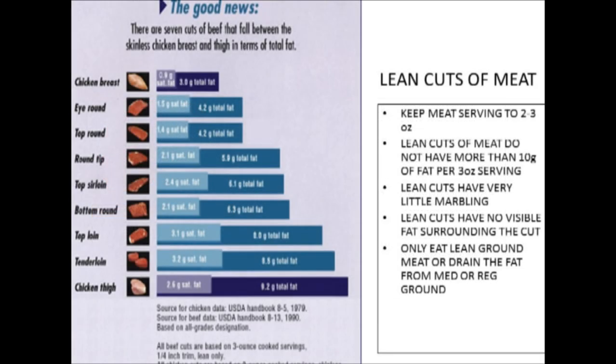What we're looking at here is a fairly organized chart that moves from above to down, starting with chicken breast and finishing with chicken thighs. You can see first the total amount of fat, and as we go down, the total amount of fat increases, and for the most part the saturated fat increases as well. The cut of beef and the cut of chicken exemplified in this chart are all equal to three ounces.